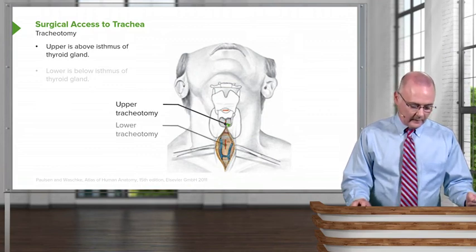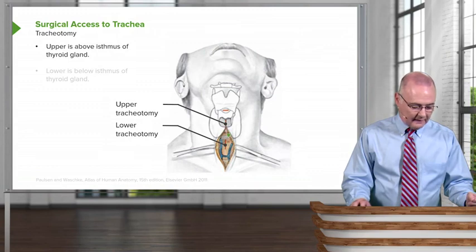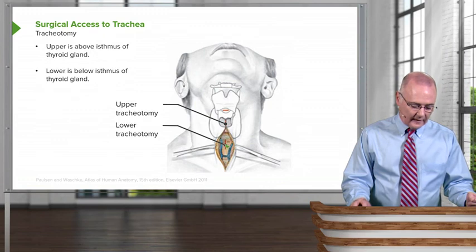The lower tracheotomy is going to be inferior to the isthmus of the thyroid gland, and you can see the vertical incision of that approach right in through here.